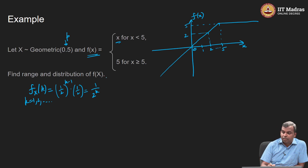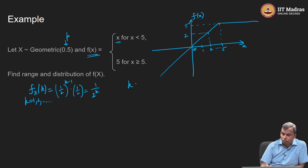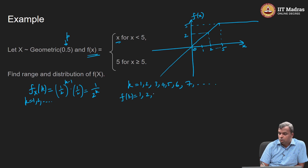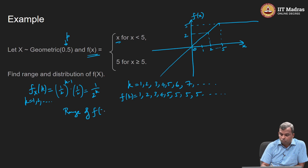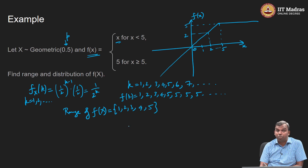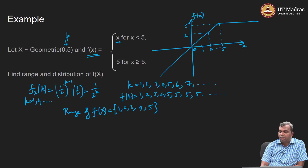We want the range and distribution of f(X). The geometric random variable takes values k = 1, 2, 3, 4, 5, 6, 7, and so on. Applying f: for k = 1, 2, 3, 4, 5 we get f(k) = 1, 2, 3, 4, 5, and for k = 6, 7, ... we also get f(k) = 5. So the range of f(X) is {1, 2, 3, 4, 5} — it does not go beyond 5, which is the nature of this clipping function. Finding the range is easy: apply f to each value in the range of X.